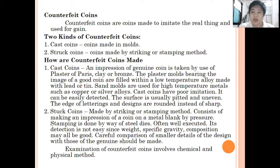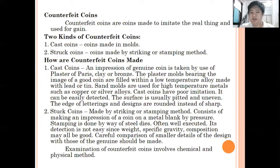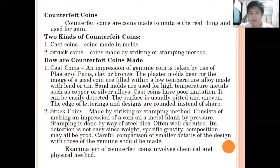For cast coins, there is a mold that corresponds to the appearance of the coin, and metals such as copper are poured in to create it. For struck coins, a metal die corresponding to the shape of the coin stamps onto a metal sheet to embed the coin's appearance. These are the two methods for creating counterfeited coins.